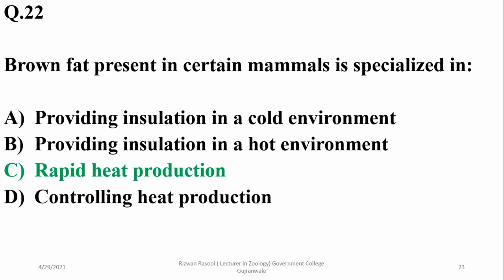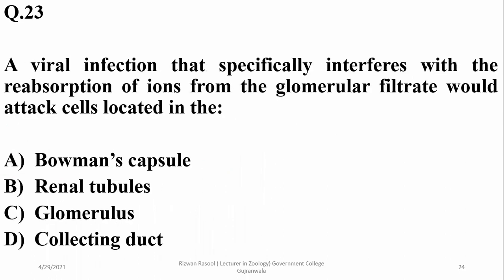A viral infection that specifically interferes with the reabsorption of ions from the glomerular filtrate would attack cells located in the renal tubules, because reabsorption occurs there.